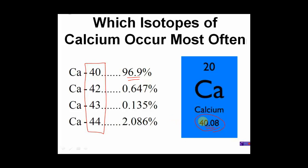Part two of this lesson is going to be how to use math to calculate that weighted average. Calcium-40 occurs most in nature, 96.9% of the time. The rest of the isotopes occur at a much lower percentage in nature, so we're going to give calcium-40 the most emphasis in the average atomic mass.